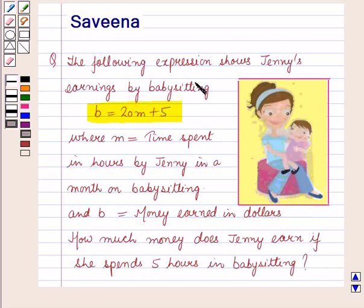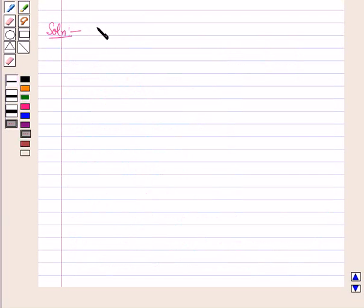Now let us start with the solution of the given question. The expression is given to us. Given B equals 20M plus 5.